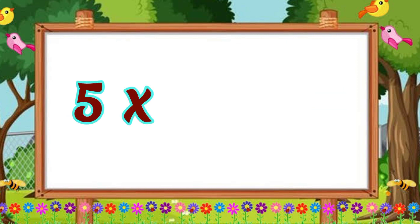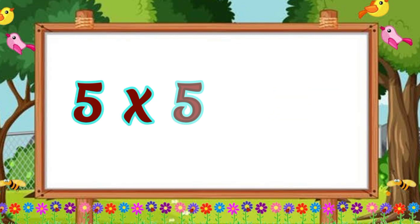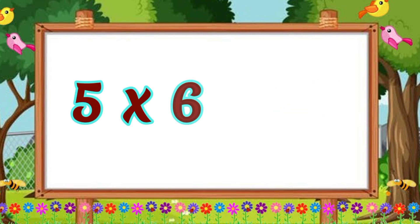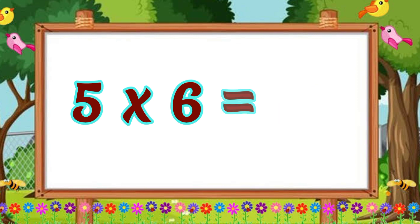Five fours are twenty. Five fours are twenty. Five fives are twenty-five. Five fives are twenty-five. Five sixes are thirty. Five sixes are thirty.